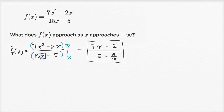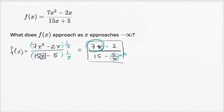When x gets very, very negative, 7x is going to become a very large negative number. Subtracting 2 from it won't matter much. Dividing by 15 won't matter much. And five over x becomes very, very small — you're taking five and dividing by ever larger negative numbers, so that goes to zero. The numerator term is going to go towards negative infinity.